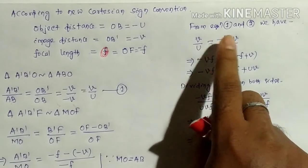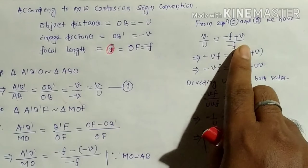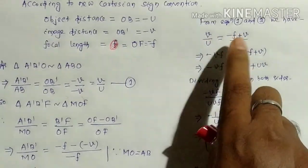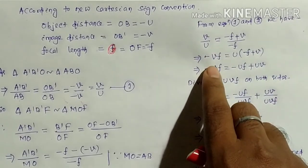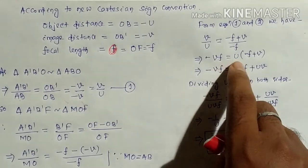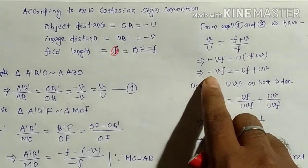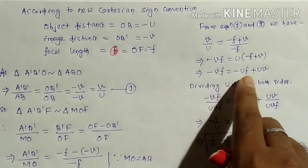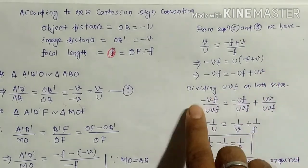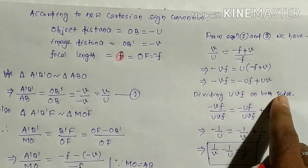From equations 1 and 2 we have: v/u = (−f + v)/f. We cross-multiply: −vf = u(−f + v), so −vf = −uf + uv.